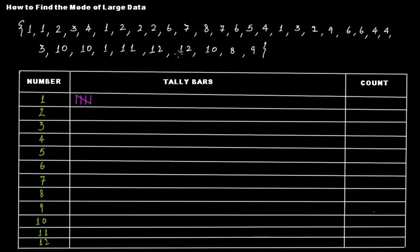Do we have another one? No. What about two? We have two here, another two, another two, another two, and another two — that's five times for two. Then for three: three is here, three is here, three is here — so we have three times for value three.